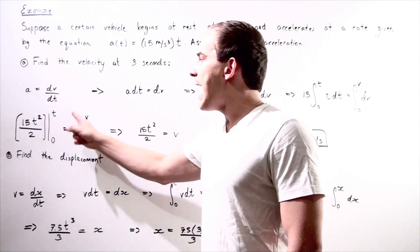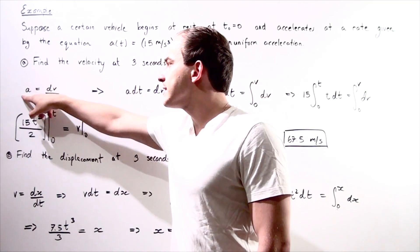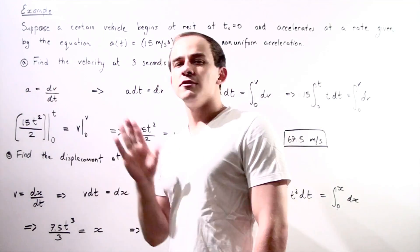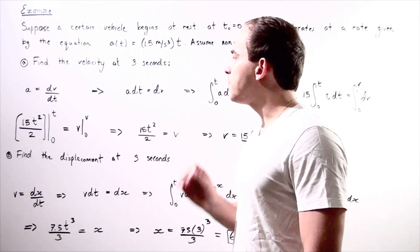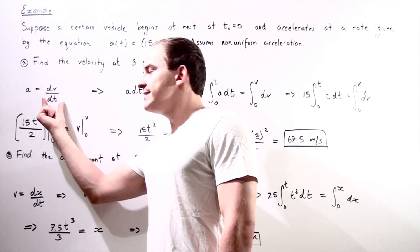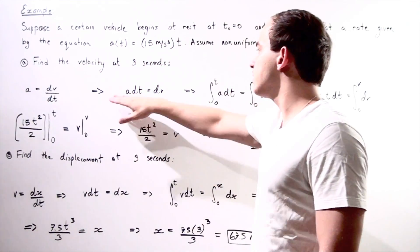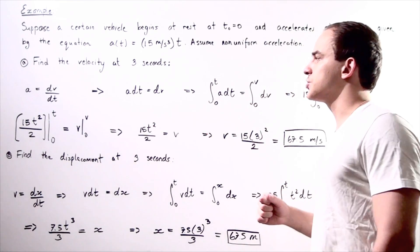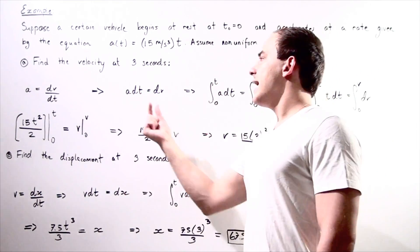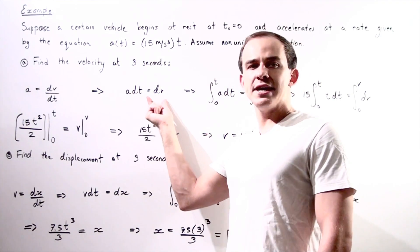Let's recall our definition of acceleration. Instantaneous acceleration is equal to the derivative of the velocity function with respect to time. Let's rearrange our equation and bring the dt term to the left side. Our instantaneous acceleration multiplied by an infinitely small change in time is equal to an infinitely small change in velocity.